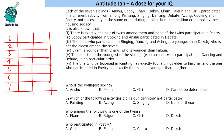It is said that the eldest and the youngest of the siblings participated in dancing and debate. The clue also tells us that the person who participated in singing, dancing, and acting are younger — so the dancing person cannot be the oldest. Therefore, dancing corresponds to the youngest sibling, and this gives us that the eldest person is participating in debate.